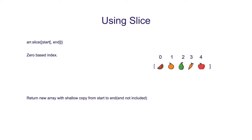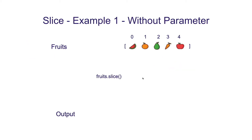Now we will learn more about slice with the help of a few examples. In example 1, we are going to use slice without any parameter. We have an array with 5 fruits and we call the slice function without any parameter. In this case, the output will be the same as the input array — it will duplicate the array for us.